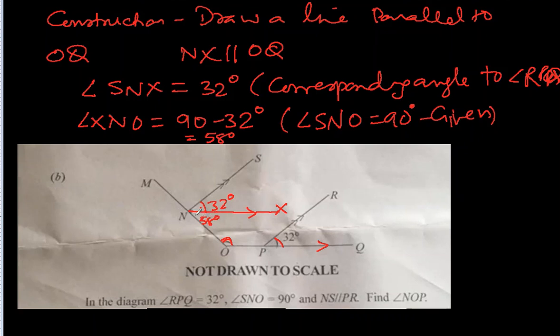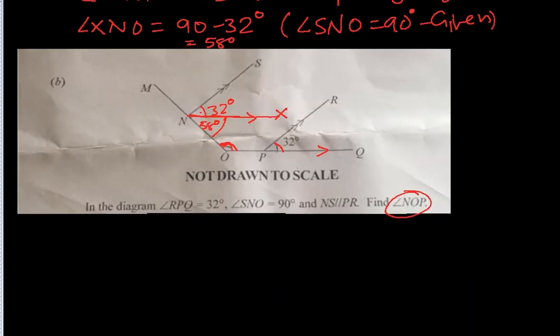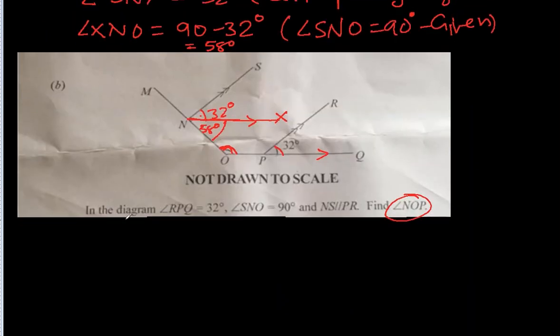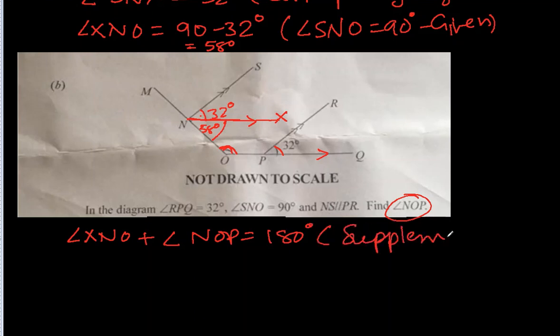Now, this angle, 58 degrees, and the required angle, that one, they are asking us to find out angle NOP. They are internal supplementary angles. Okay. So angle XNO plus angle NOP equal to 180 degrees because they are interior angles or supplementary angles, whatever you call them.